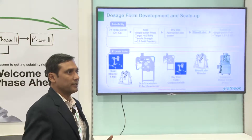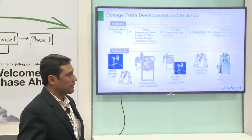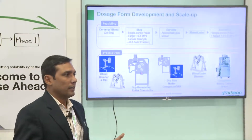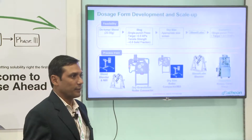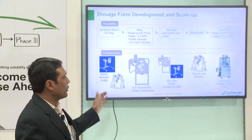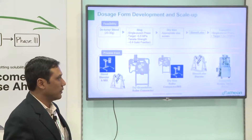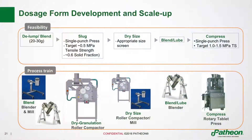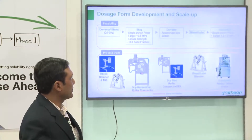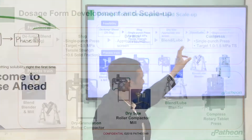Moving on to the drug product: the spray dried intermediate is after all a powder, and you need to convert it into a dosage form — typically tablets or capsules. I'm going to talk about tablets as the most widely used oral dosage form. This is the process scale-up train for drug product development: at small feasibility scale (20–30 grams) we use a slugging process with a single punch press to make a slug compact, mill it by screening through a sieve for dry sizing, then do blending and lubrication, and use a single punch press for compression — purely for prototype development.